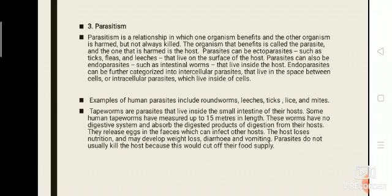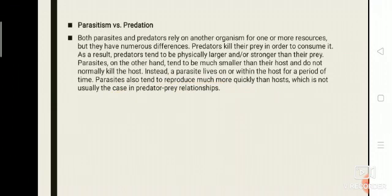Examples of human parasites include roundworm, leeches, ticks, lice, and mites. Parasitism vs. predation: both parasites and predators depend on another organism for one or more resources, but they have numerous differences. Predators kill their prey in order to consume it, and as a result tend to be physically larger and stronger than their prey. Parasites, on the other hand, tend to be much smaller than the host and do not normally kill the host. Instead, a parasite lives on or within the host for a period of time. Parasites also tend to reproduce much more quickly than the host, which is not usually the case in a predator-prey relationship.